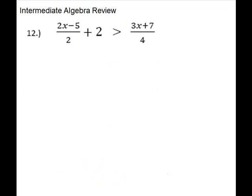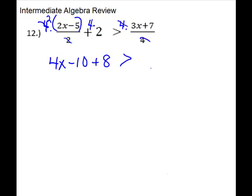Next we have an inequality with rational expressions. We need to clear the fractions just like we did with equations, so we pick the common denominator — looks like 4 will work. We're going to multiply through by 4; on the numerators you also have to remember to do every single term. The 2 divides into 4 twice, so you need to distribute that 2: 2 times 2x gives us 4x, 2 times minus 5 gives us minus 10, and 4 times 2 we just multiply. On the other side, the 4 cancels, and on the left the negative 10 plus 8 gives us negative 2.